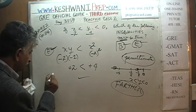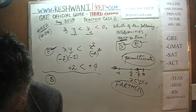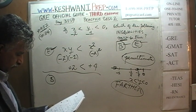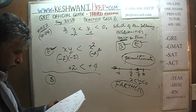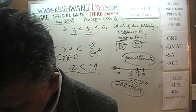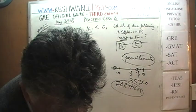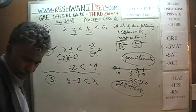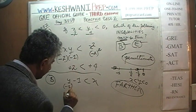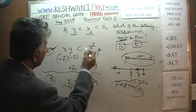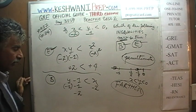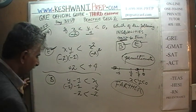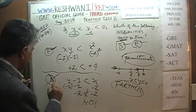Now let's check B with the same numbers. B says y - 1 < x. With y = -1: negative one minus one equals negative two. And x is also negative two. Is negative two less than negative two? The answer is no — that is not true. We've knocked out B.